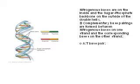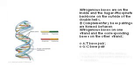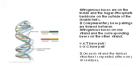One is the adenine-thymine base pair and the other is the guanine-cytosine base pair — the AT-GC model. On each strand, the helical structure is repeated after every 10 residues.